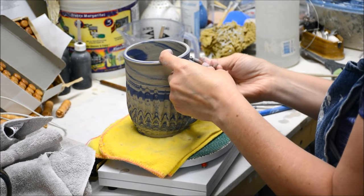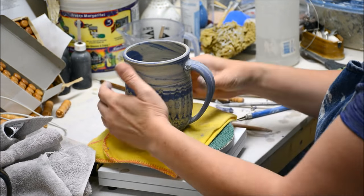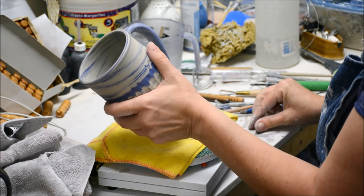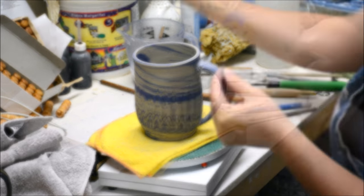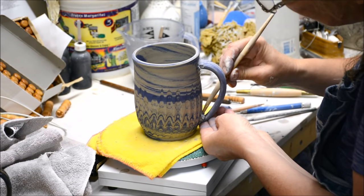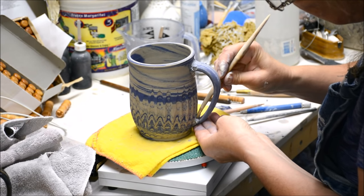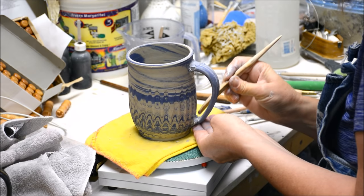And I'm just using a little wooden tool to blend that together. And I'm also adding an extra little supportive coil down on the inside of the handle, down toward the bottom of the handle. And I'm going to blend that in there.